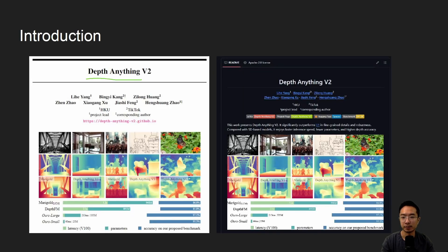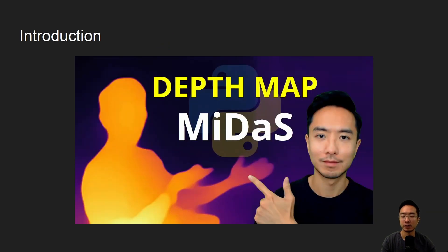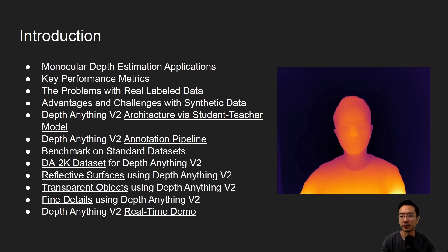Depth Anything V2 just came out and there's a paper as well as a GitHub repo that goes along with it. This model can take a single image and obtain the depth map using only one camera. Previously we've talked about depth maps using a different model called MiDaS, so you could check out that video for a comparison. In this video we'll be focusing on monocular depth estimation applications.